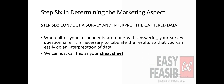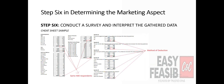When all of your respondents are done answering your survey questionnaire, it is necessary to tabulate the results so that you can easily interpret the data — we can call this your cheat sheet. There are two sets of questions in your survey questionnaire. The first set is for demographics, used to profile respondents in terms of age, location, sex, and sources of income. The second set is the questions necessary for the determination of demand. The number of respondents who answer the first set is consistently 400, while on the second set, it keeps reducing every time the question is answerable by yes or no.